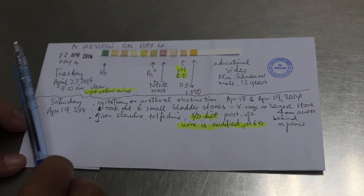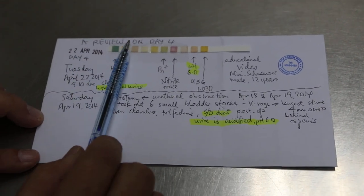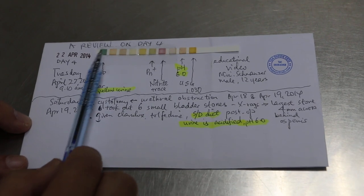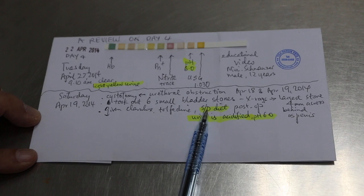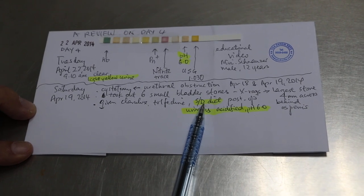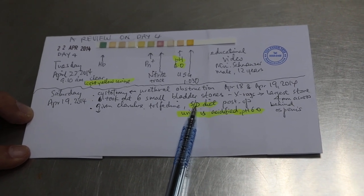So in this case, I'll show an example of a review on day 4 of the urine being passed out by the dog. The dog has been given an SD diet, which is to dissolve the SD stones and to acidify the urine.